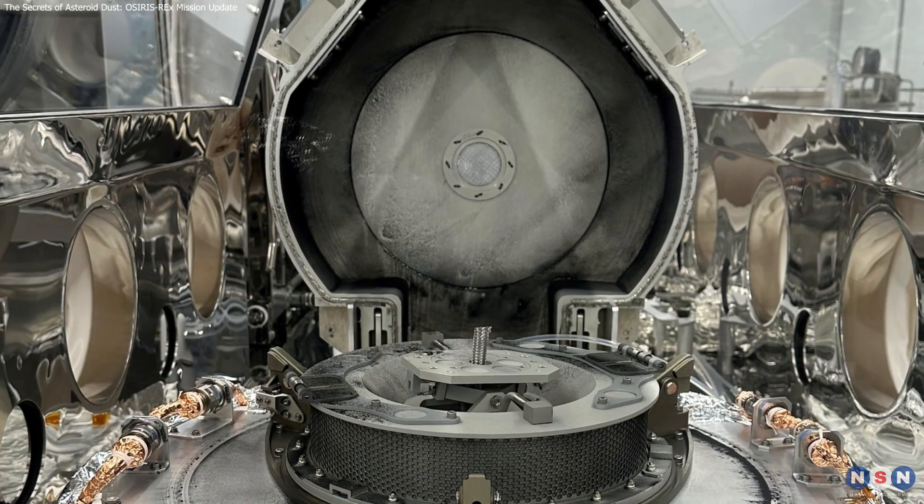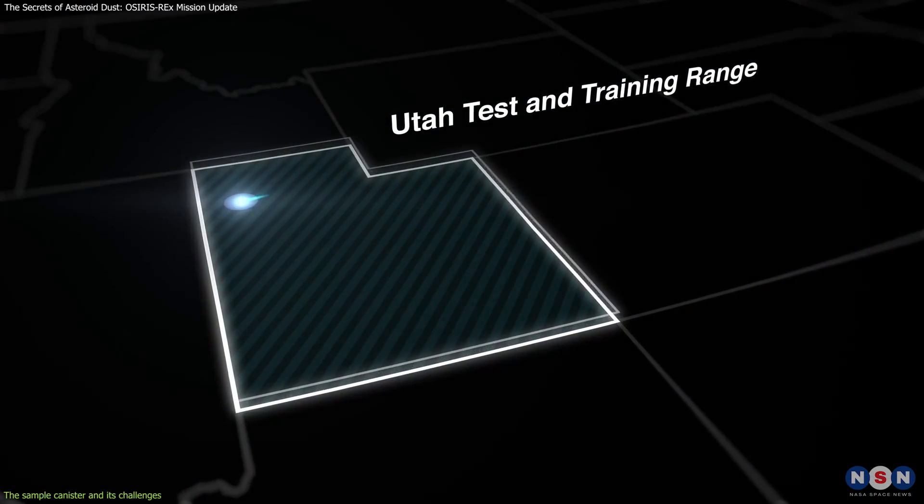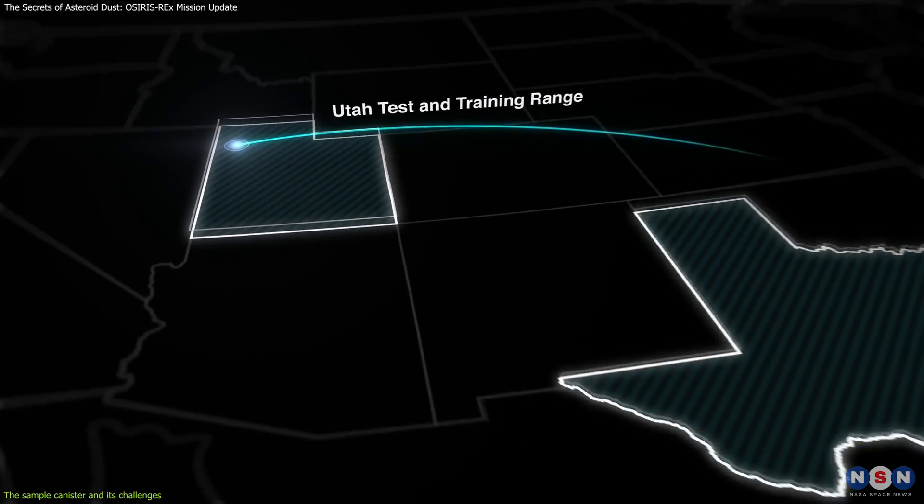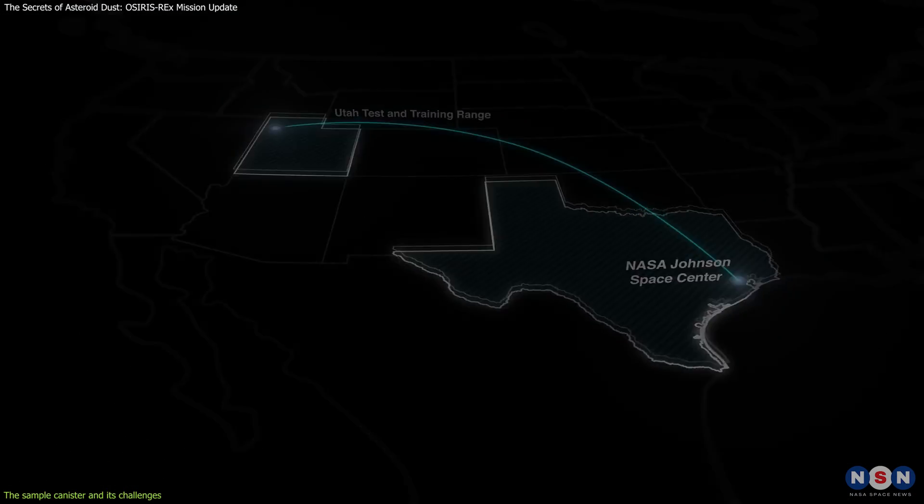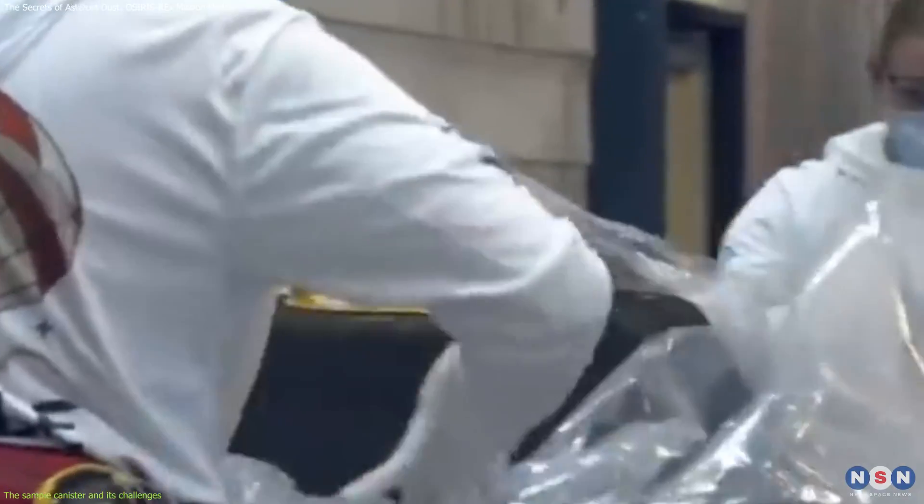The first thing we need to know is how the sample canister was transported from Utah to NASA's Johnson Space Center in Houston, Texas, where it was opened and analyzed by the scientists.